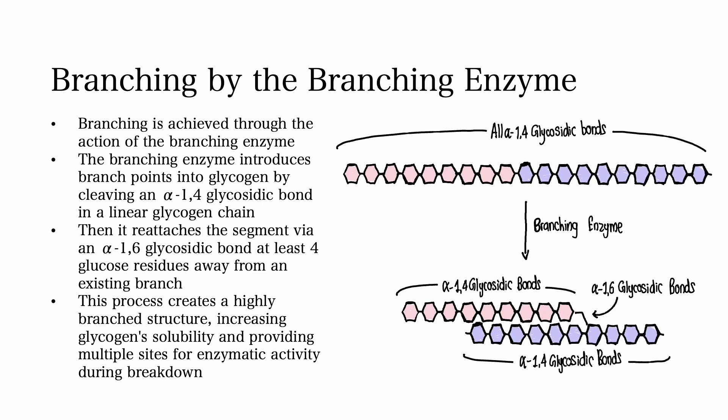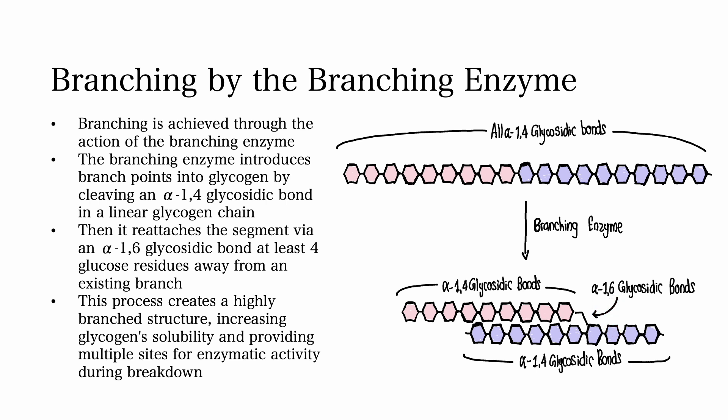Step 4: Branching by the branching enzyme. An essential feature of glycogen is its highly branched nature, which increases its solubility and allows for rapid synthesis and breakdown of glycogen molecules. The branching enzyme introduces branch points by cleaving an alpha-1,4 glycosidic bond in the linear glycogen chain, then reattaching the cleaved segment via an alpha-1,6 glycosidic bond at least four glucose residues away from an existing branch. Branching enhances the number of terminal ends where enzymes can add or remove glucose units, allowing for efficient storage and mobilization of energy.